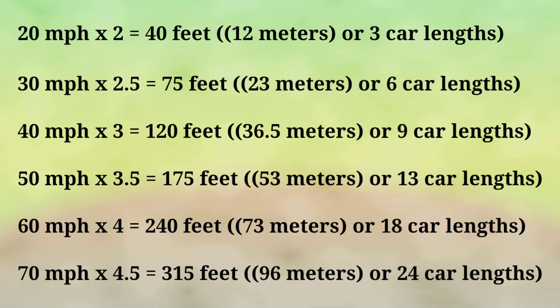Here is a great way to remember the overall stopping distances. Starting from 20 miles per hour, you simply have to multiply the speed by intervals of 0.5, beginning with 2 — like 2, 2.5, 3, 3.5, and so on. For example, if you are traveling at 20 mph multiply by 2, that equals 40 feet; at 30 mph multiply by 2.5, that is 75 feet; at 40 mph multiply by 3, that is 120 feet, and so on. These calculations are a simple way to help you remember the correct stopping distances, but please be aware that these are approximate.